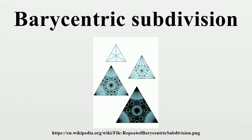False Barycentric Subdivision: sometimes the term barycentric subdivision is improperly used for any subdivision of a polytope into simplices that have one vertex at the centroid of the polytope and the opposite facet on the boundary. While this property holds for the true barycentric subdivision, it also holds for other subdivisions which are not the BCS.